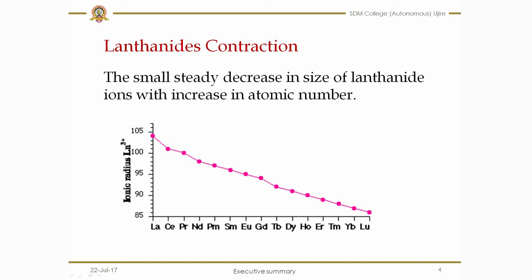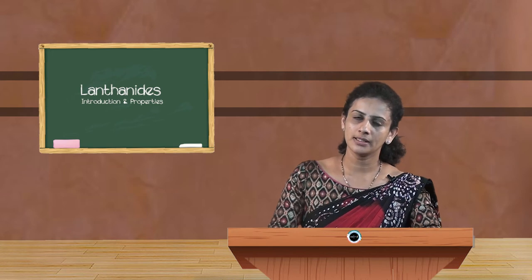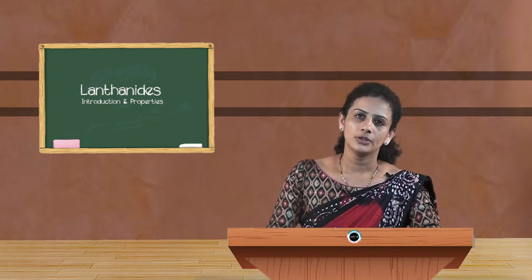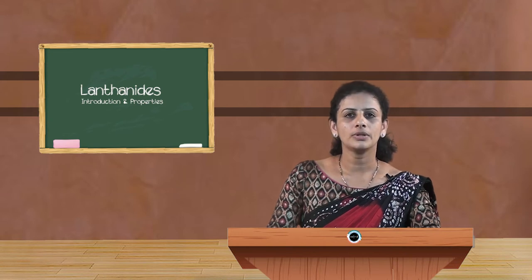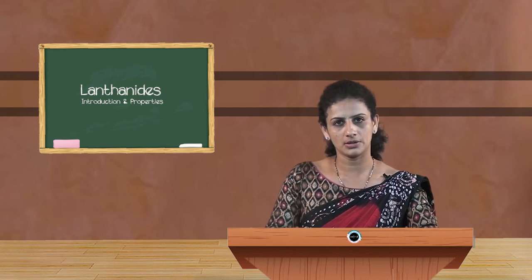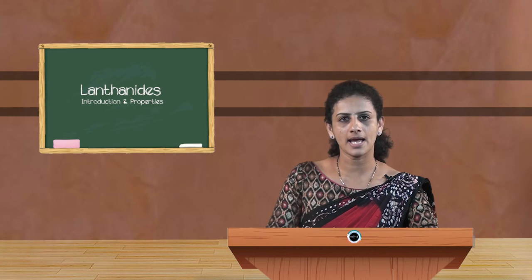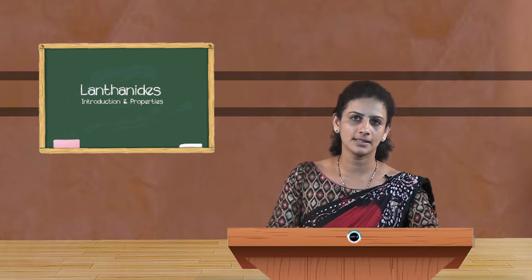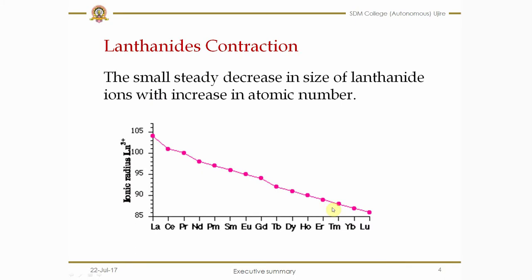Why does atomic radii decrease with increasing atomic number? As the atomic number increases, the nuclear charge also increases, so there is a greater attraction between the nucleus and the outermost electrons, causing contraction and size decrease. In the case of lanthanides, this lanthanide contraction occurs because of the imperfect shielding of one 4f electron by other electrons of the same subshell.